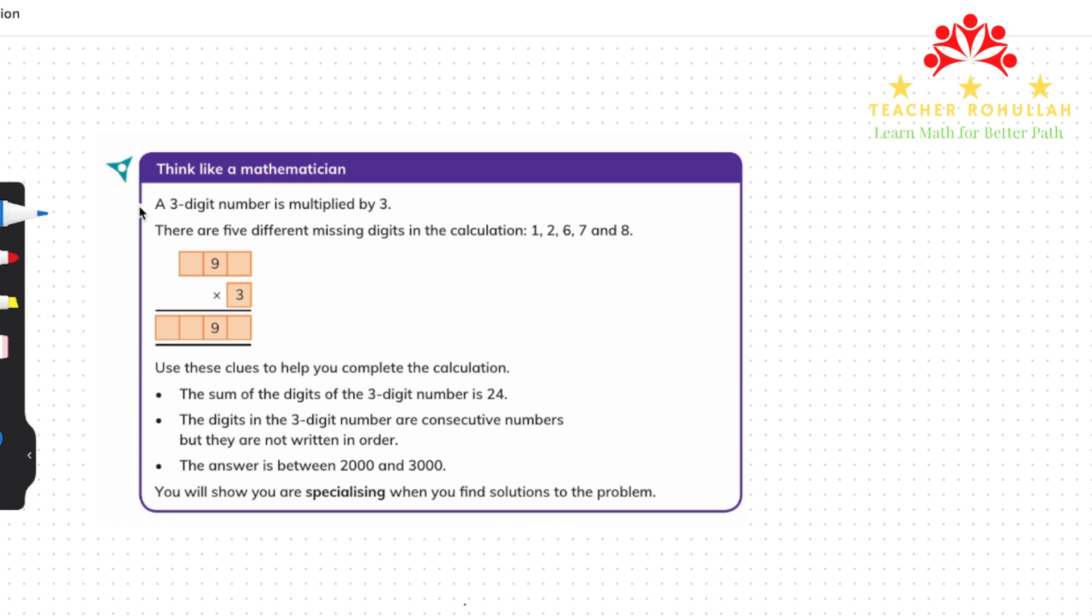So the question here says, a three-digit number is multiplied by three. There are five different missing digits in the calculations. It can be one, two, six, seven, and eight.